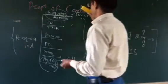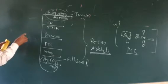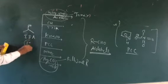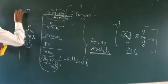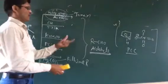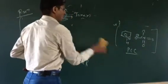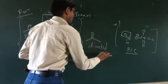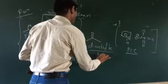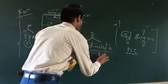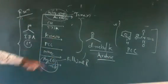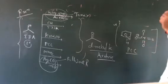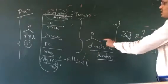Now, for secondary alcohol: if we take isopropyl alcohol, which is a secondary alcohol, and treat it with such types of oxidizing reagents, the product formed is a ketone. For example, isopropyl alcohol gives dimethyl ketone — that is acetone. So, oxidation of primary alcohol gives aldehyde and oxidation of secondary alcohol gives ketone.